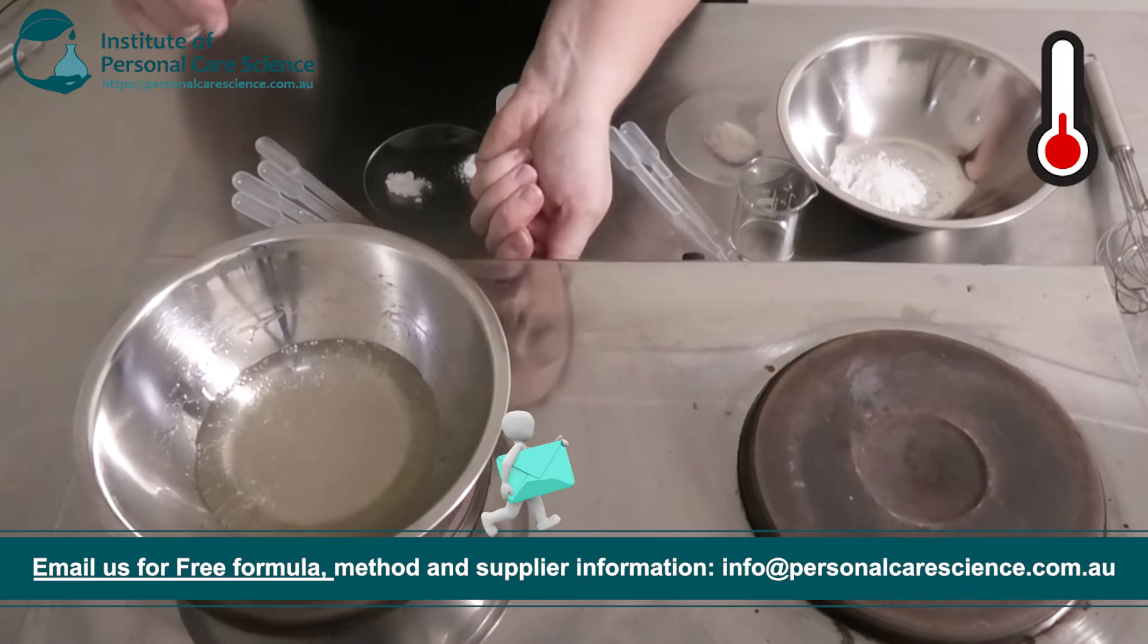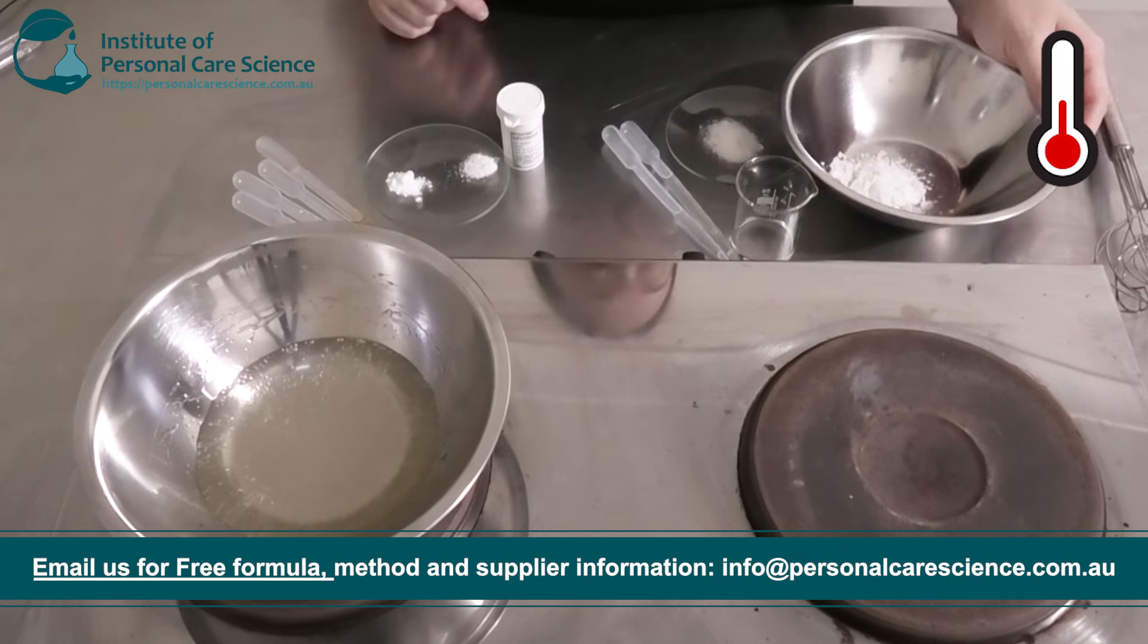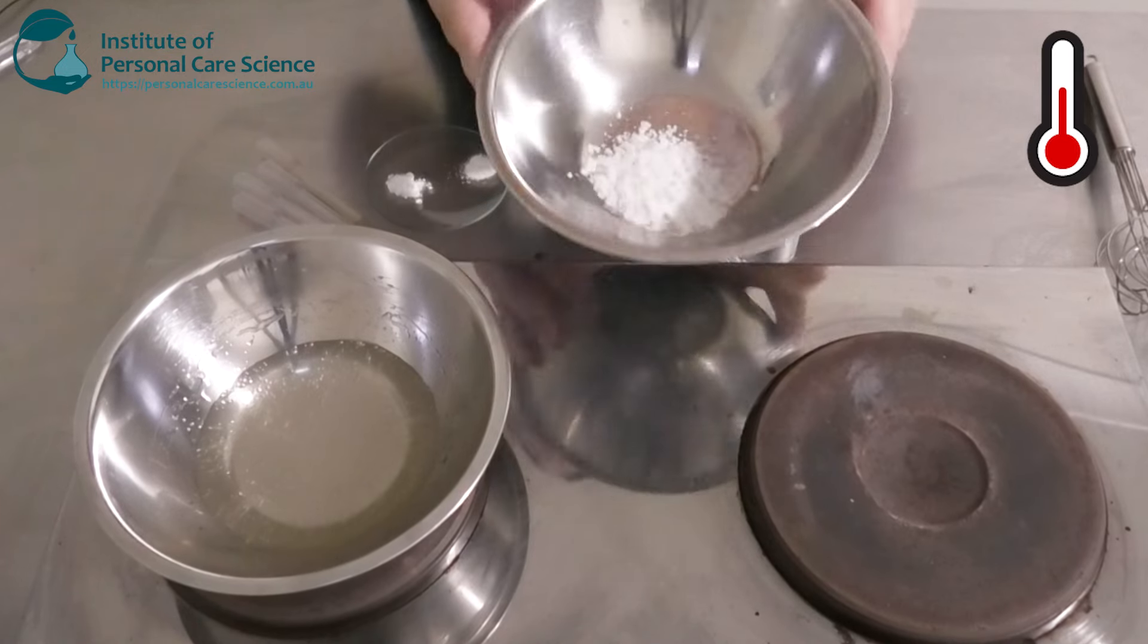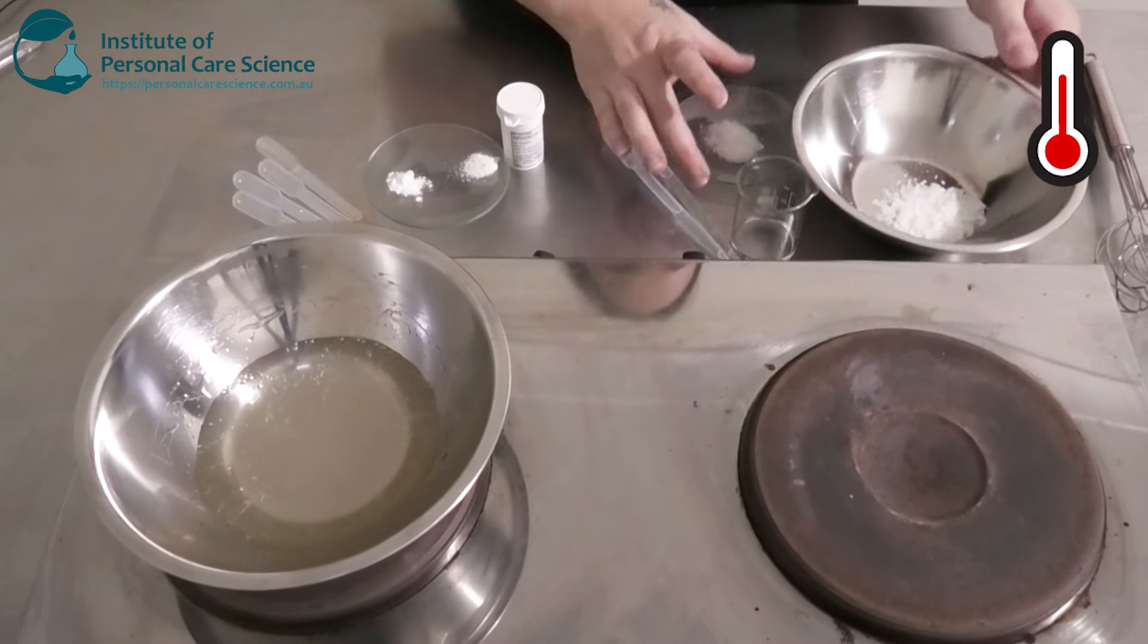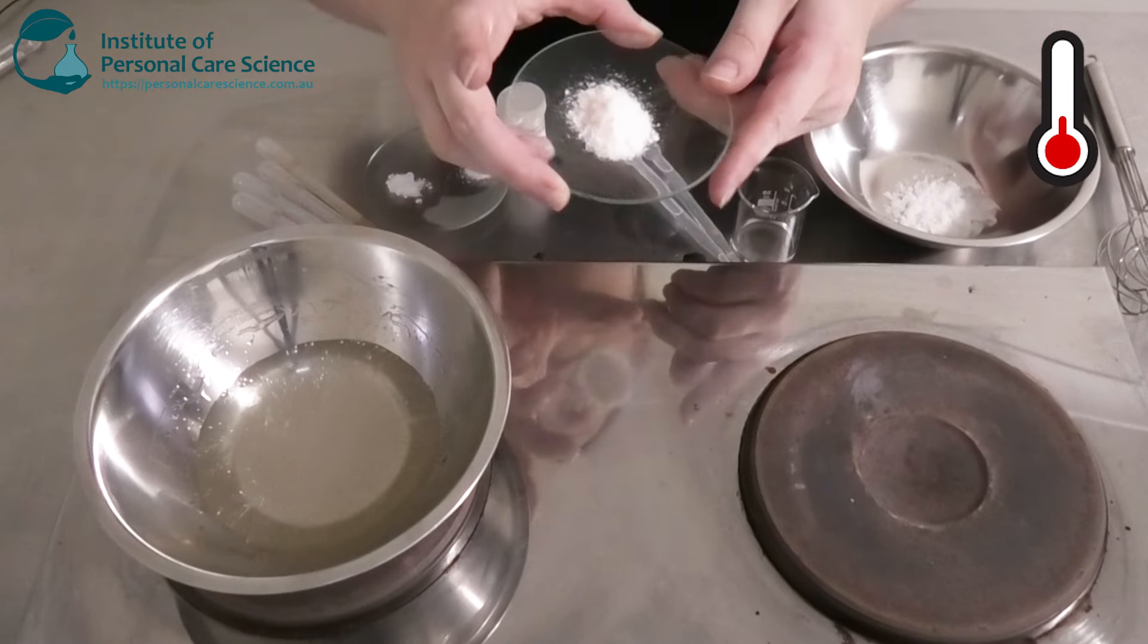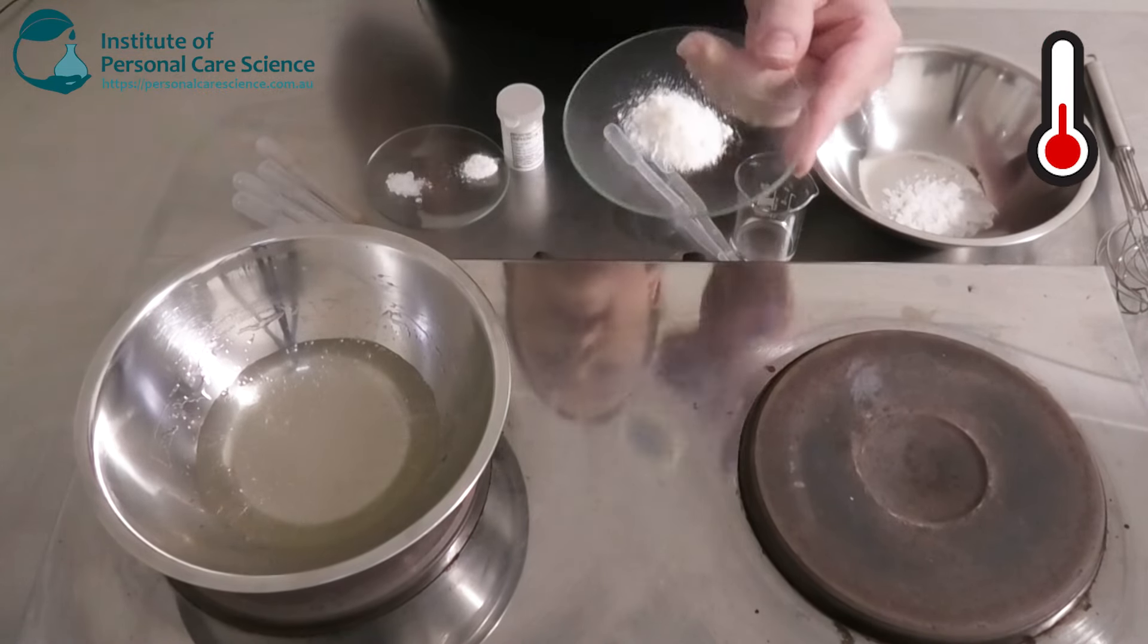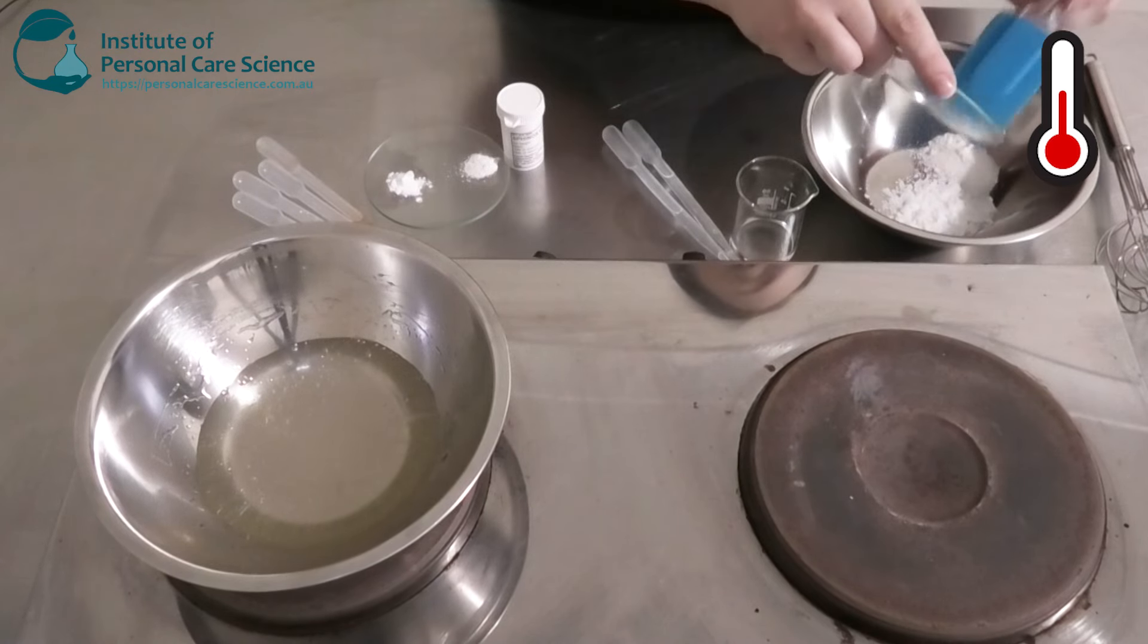Now I am going to pop that one on heat and while that's heating I'm going to add together my oil phase. So in here I have some Oliven 1000. This is a really good non-ionic emulsifier. It's waxy so it's going to help build some viscosity in our cream. To this I'm going to add some glycerol stearate citrate. This is an anionic emulsifier. It's in a powder form. This is also going to help with viscosity and also stability.